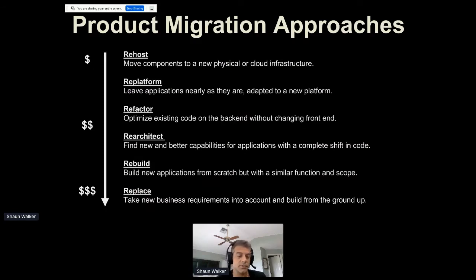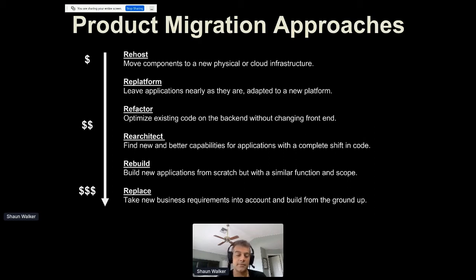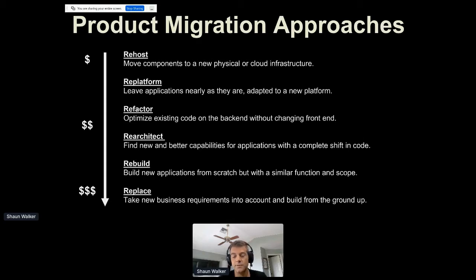Looking at the strategic ways product migrations are evaluated, they range from the least costly — re-hosting an application from one environment to another — all the way to a full replacement, which is the most expensive approach but allows you to take full benefit of a new platform. When I looked at .NET Core and the type of migration required to move DNN forward, it really did focus on re-architecture, rebuilding, and replacement as the only real options.